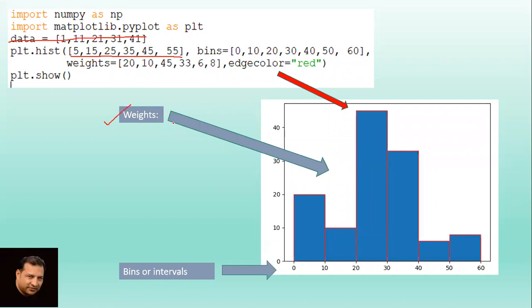See what happens when we display it. Weights first is 20, so this is the value of the height of this bar. Then 10, so the height of this bar is at 10. Then 45, near about 45. So I think weights is clear to you. Edge color is red just to separate these bars from each other. These are bins or intervals 0, 10, 20, 30, 40, 50, 60.